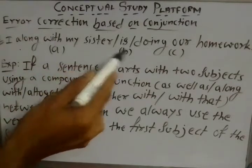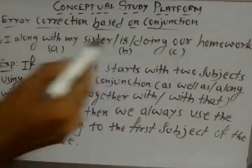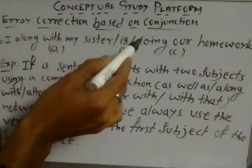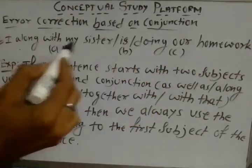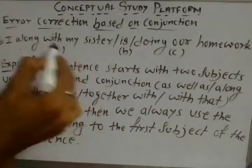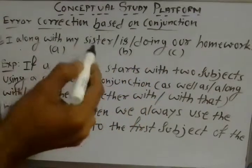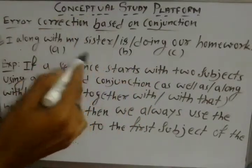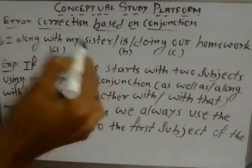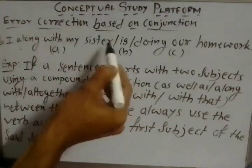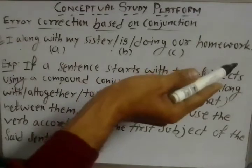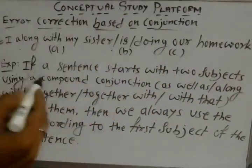The sentence is: 'I along with my sister is doing our homework.' Is this sentence correct or incorrect? You have to decide. There are three options marked with slashes — after 'sister', after 'is', and after 'homework'. Is the sentence correct or incorrect?